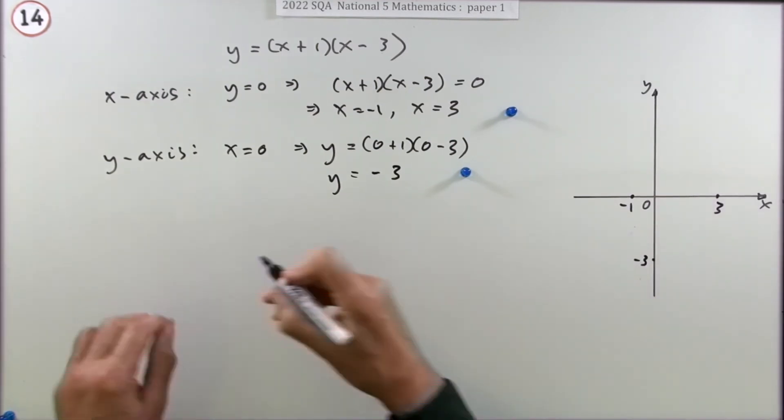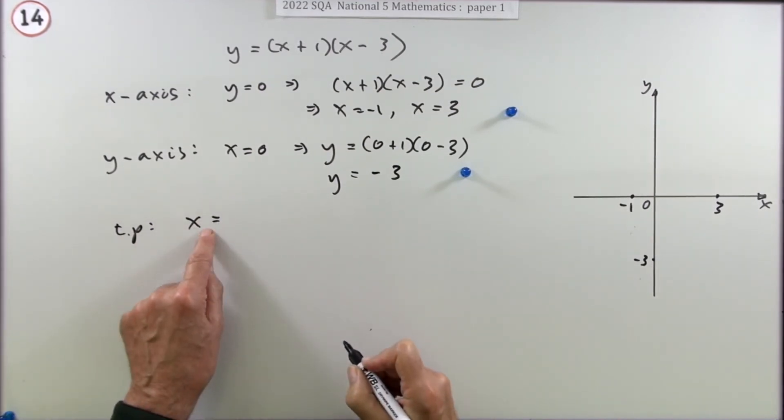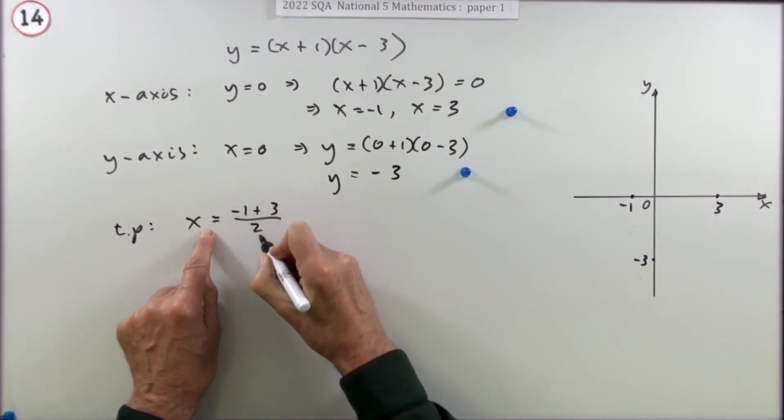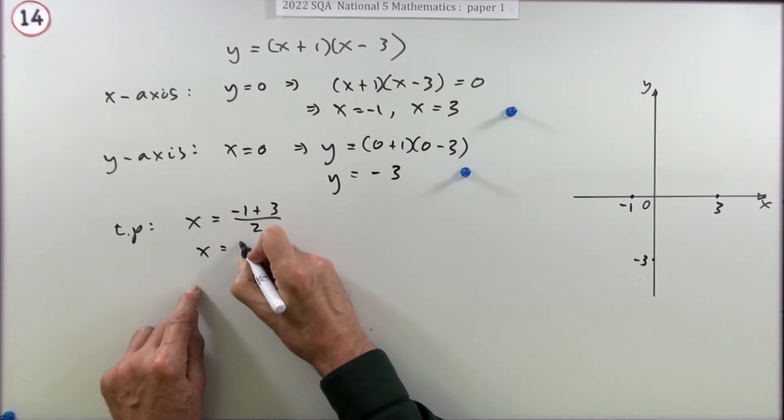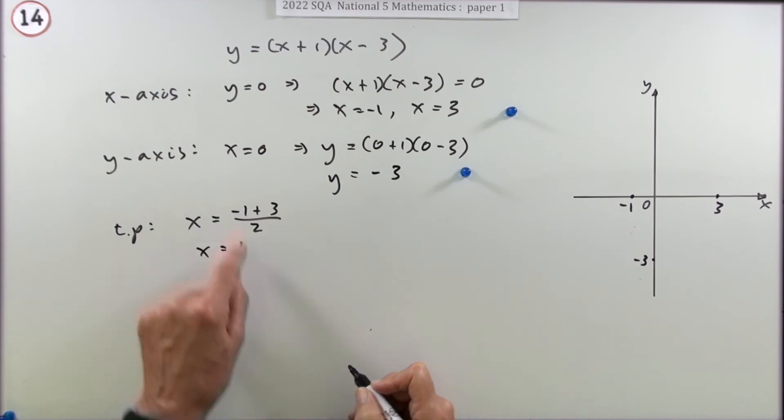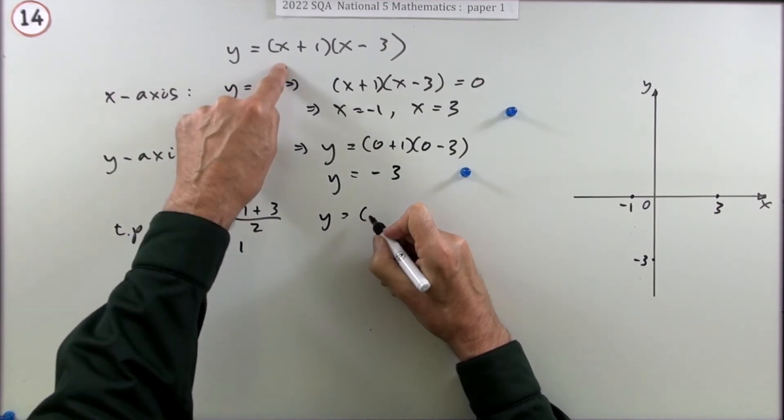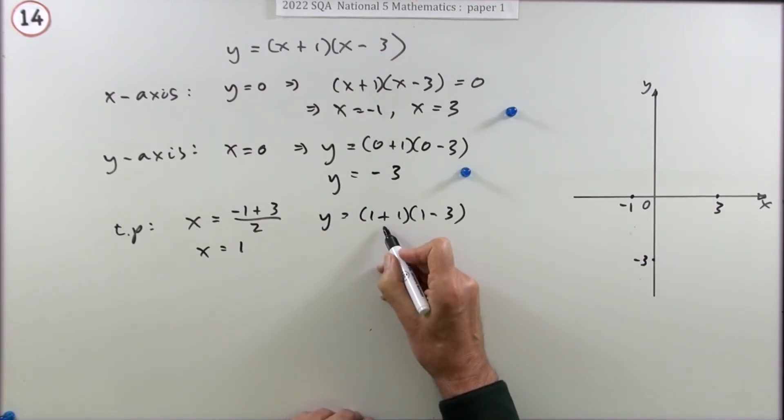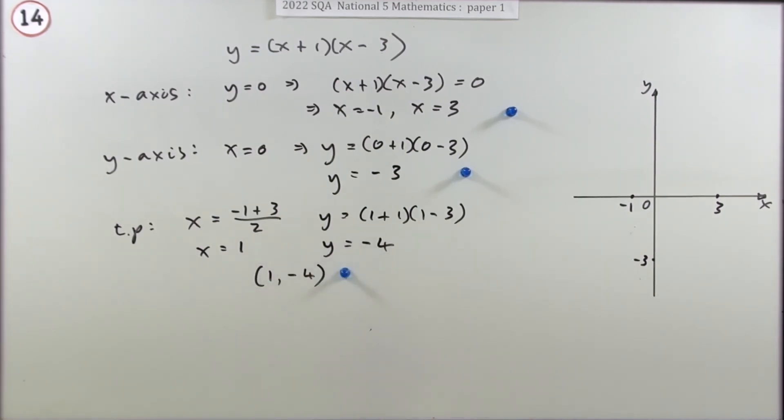Or you could put it down this way: turning point, you know where the x-coordinate will be because it has to be halfway between those two zeros. So it's halfway between negative one and three. Halfway between them would be add them, find the average, add them and divide by two. So that's at x equals one. Now you know what x is, now you can use this equation, this coordinate equation where x is one this time. So one plus one times one minus three, so that's two times negative two, so y is going to be negative four. So the turning point's at one, negative four.